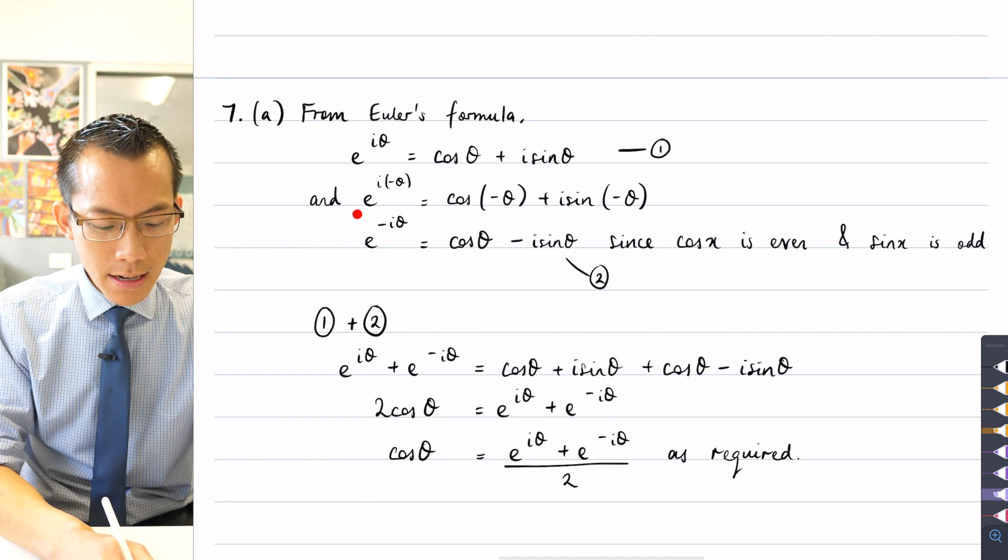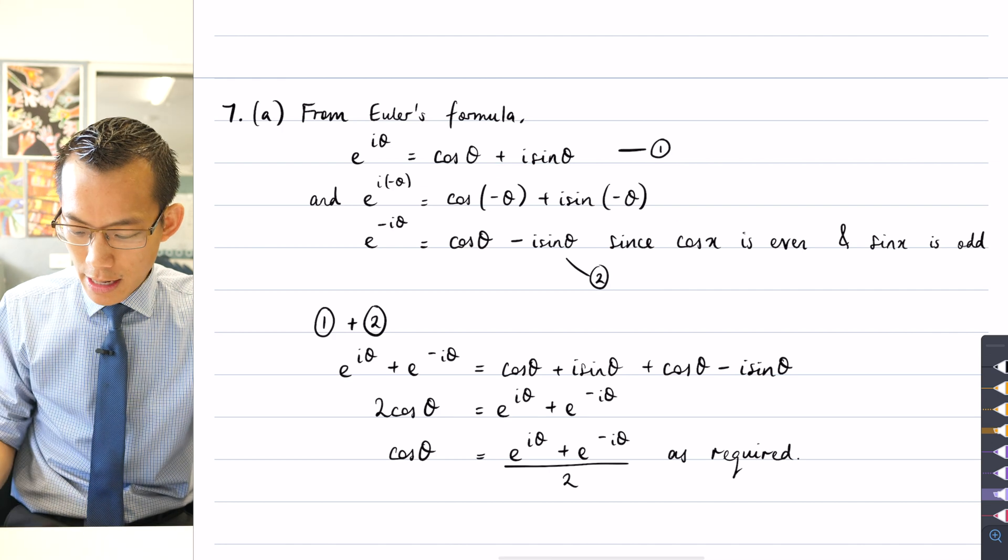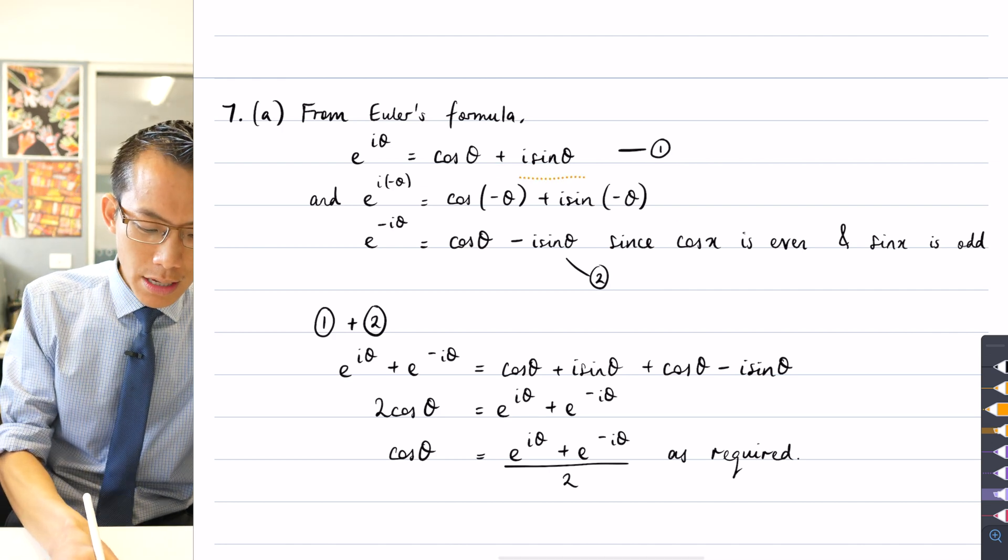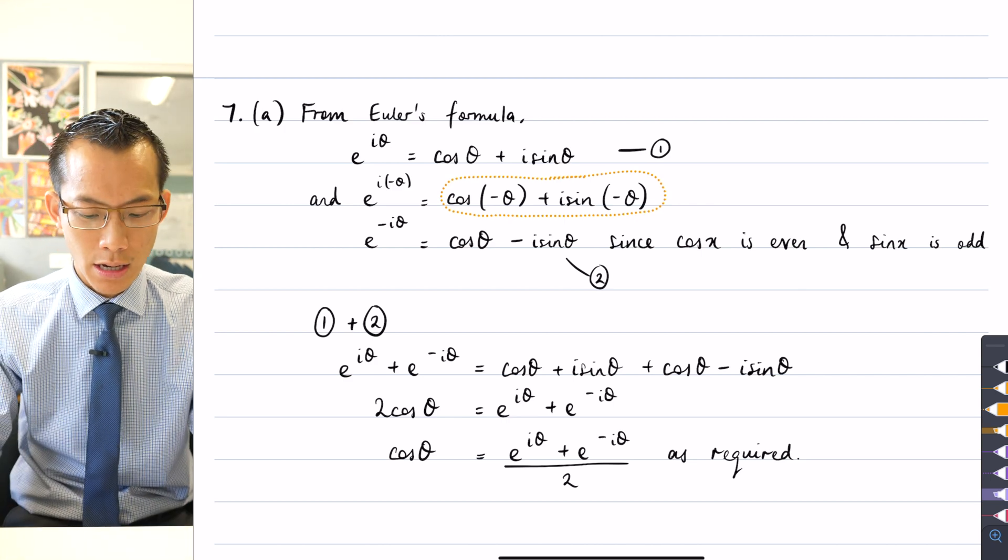So if that's e^(iθ), then e^(i·-θ) is, and this is a step right here that was skipped by many, many students, it's cos(-θ) + i sin(-θ).